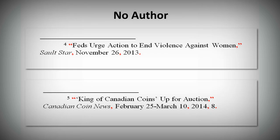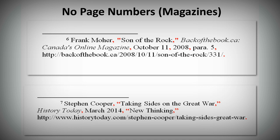Often with newspaper and magazine articles, there isn't an author's name listed, or for an online magazine, there aren't any page numbers. If you don't have an author's name, start with the title of the article instead. For magazines, if you don't have a page number to help your reader locate the original quotation, use a paragraph number or a heading or section description instead. Remember, for newspaper articles, Chicago recommends never using page numbers.